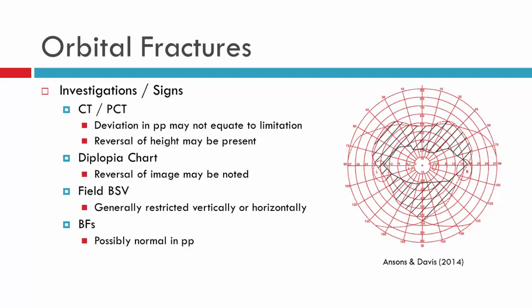You'll look at the cover test and the prism cover test, measuring in the positions of gaze that warrant investigation. The deviation in primary position may not be as large as the limitation you're observing — this is often an indicator that the deviation is mechanical rather than neurogenic. When you measure the deviation you may find reversal of height. The diplopia chart doesn't behave on the basis of neurogenic palsy principles, and you may find reversal of images.